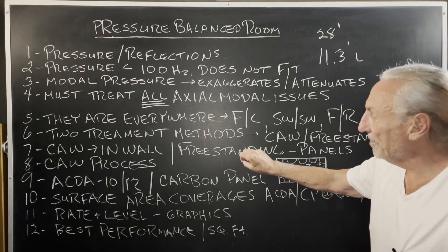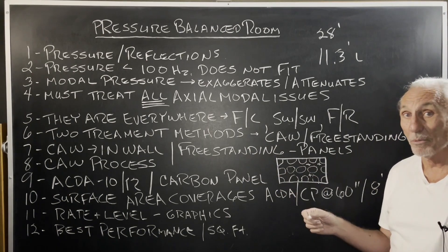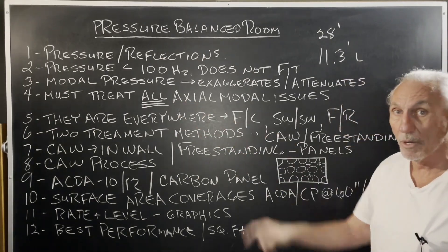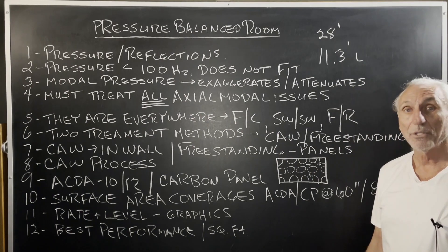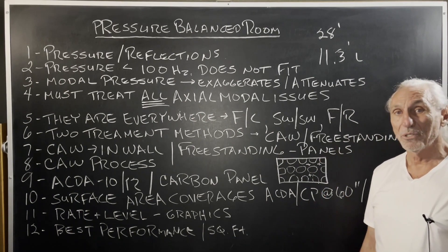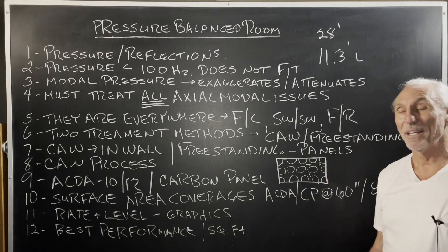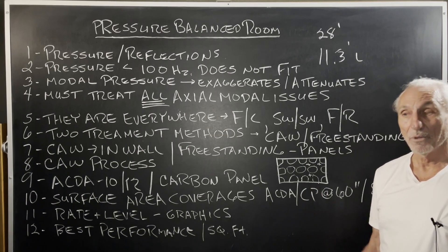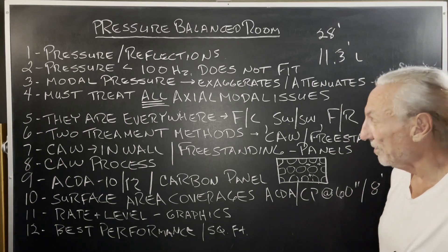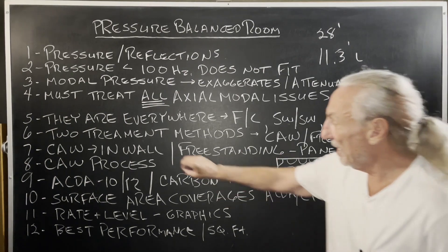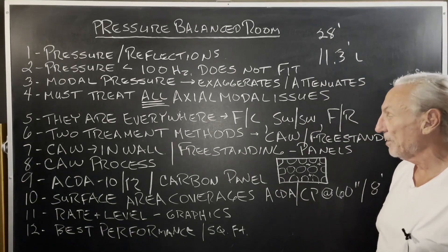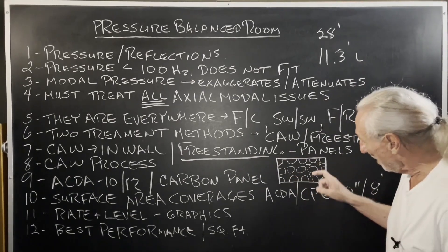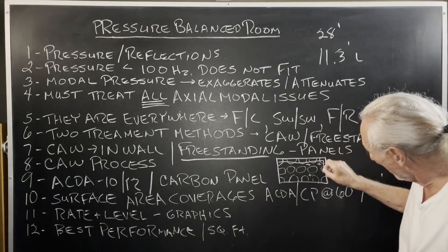The only way to do it is two processes. You build it into the wall and turn the whole room into an absorber — we've got to get all axial modes. They're the loudest, most powerful, and produce the most distortions. The tangential and oblique modes can usually be handled without going to such extreme situations, with wall-hanging units. For in-wall treatment, there's the CAW system — Project 30 in the project section of our website. The other option is freestanding panels. Since the problem is everywhere in the room, we have to treat the whole room.